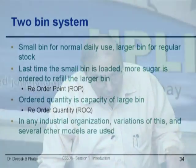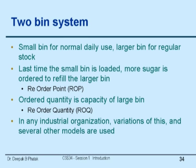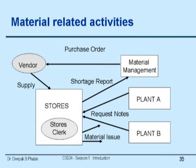In any industrial organization there will be variations of this and several other models because it's a very complex problem. Imagine you have 10,000 items in the inventory — each item has a different set of delays associated with supply dates, different pricing, different costs. In this simplified mechanism, what are the material-related activities that happen? We are trying to answer: what information is needed, why it is needed, when it is needed, and by whom it is needed, making the stores clerk our focal point.